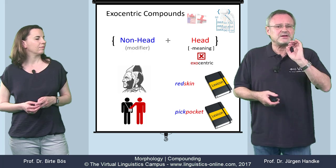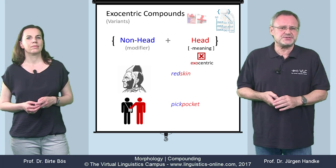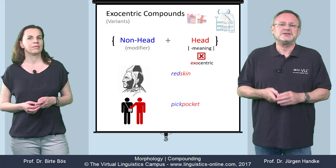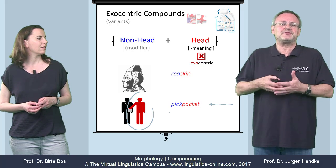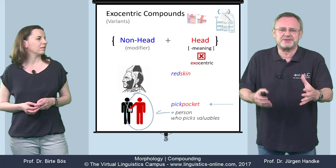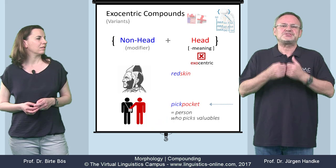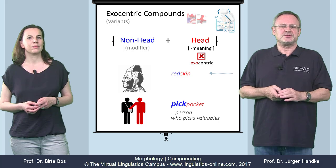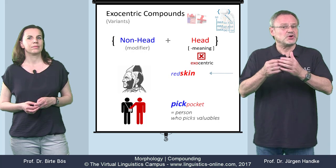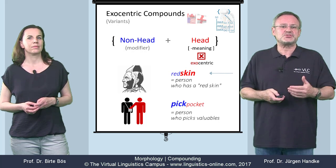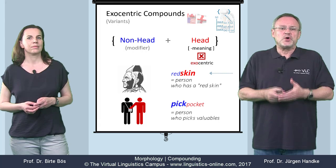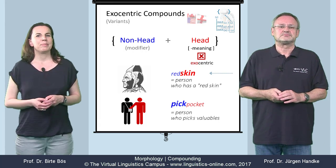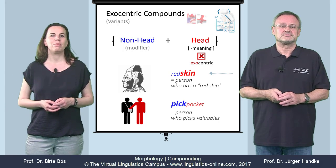However, there are variants of exocentricity. Whereas in 'pickpocket,' the unexpressed semantic head refers to a person who picks valuables, and we see an emphasis on the modifier, in 'redskin' we find an emphasis of the head — that is, a person who has this red type of skin. There are different types of exocentric compounds.